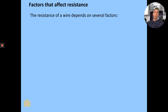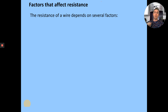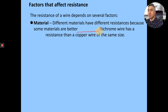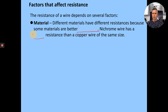We're going to review what happens when you change part of a wire and see how it affects resistance. Last lesson, you looked at an experiment to determine the resistance of a wire. But the resistance of the wire changes depending upon different factors. Different materials have different resistances because some materials are better conductors. Nichrome wire has a higher resistance than copper wire.